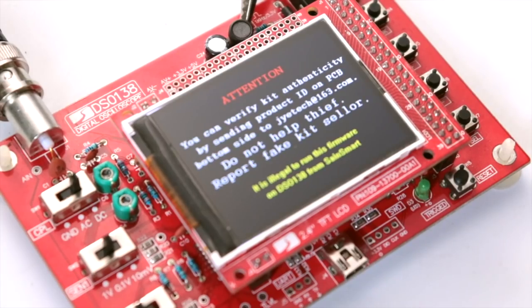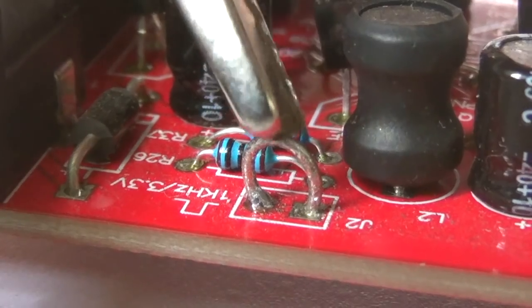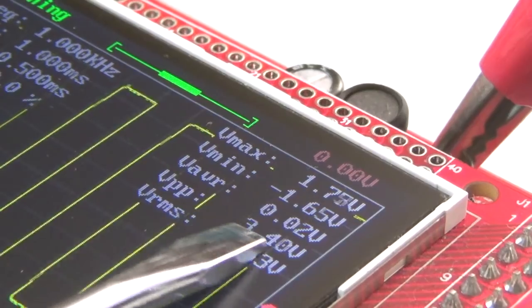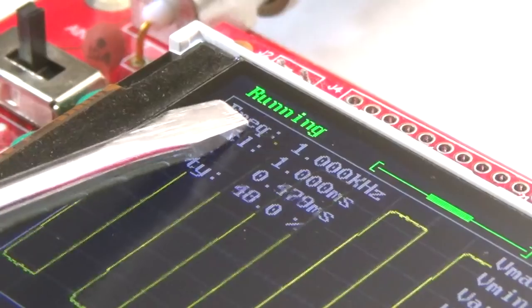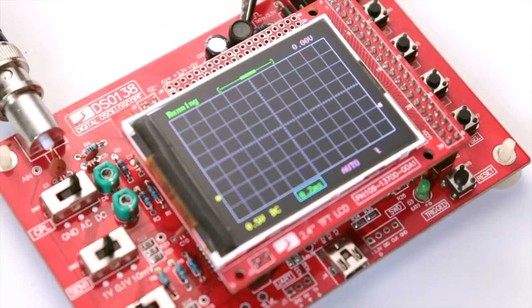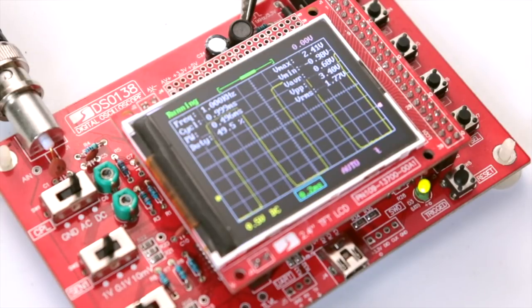First you need to calibrate this oscilloscope. For this you need to connect signal probe with this pin. From this pin, peak to peak 3.3 volt 1 kHz signal is coming out. Let's try to understand how to work this oscilloscope.